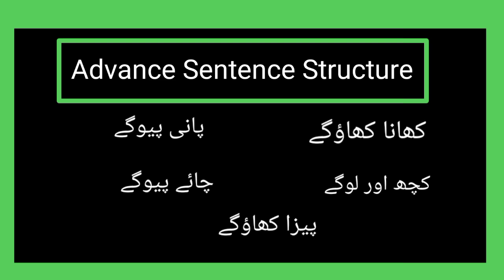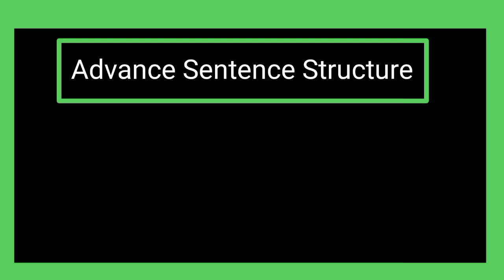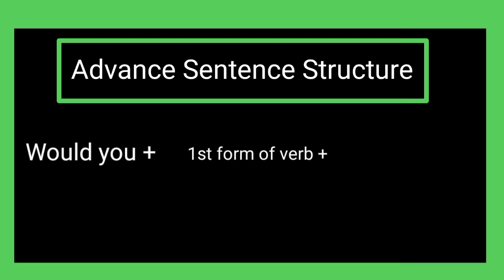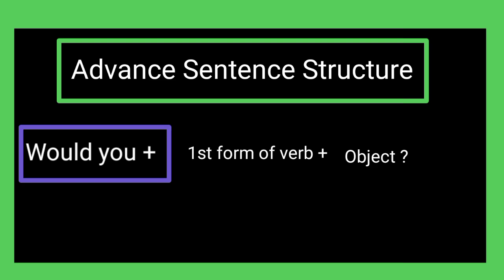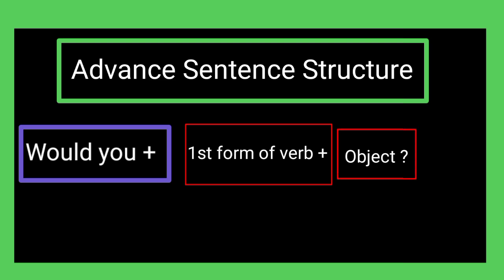We use: Would you plus first form of verb, which is the base form, plus the object. Would you — ke baad first form of verb, first form ke baad object.